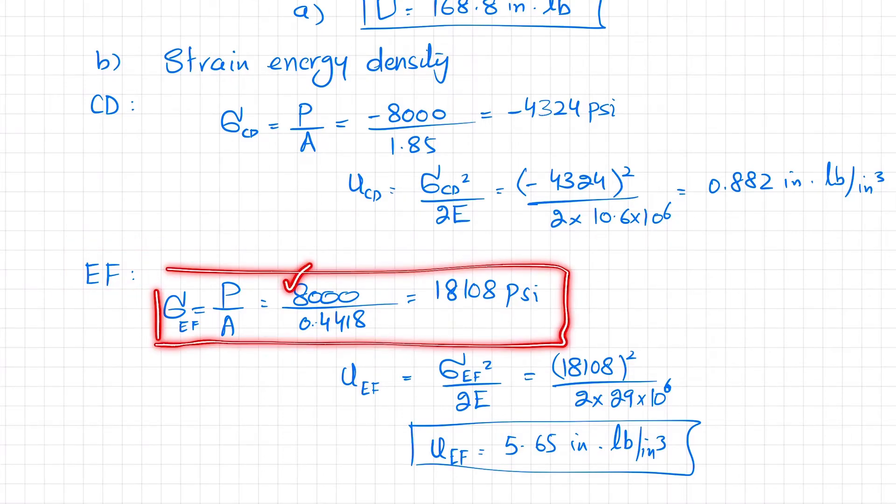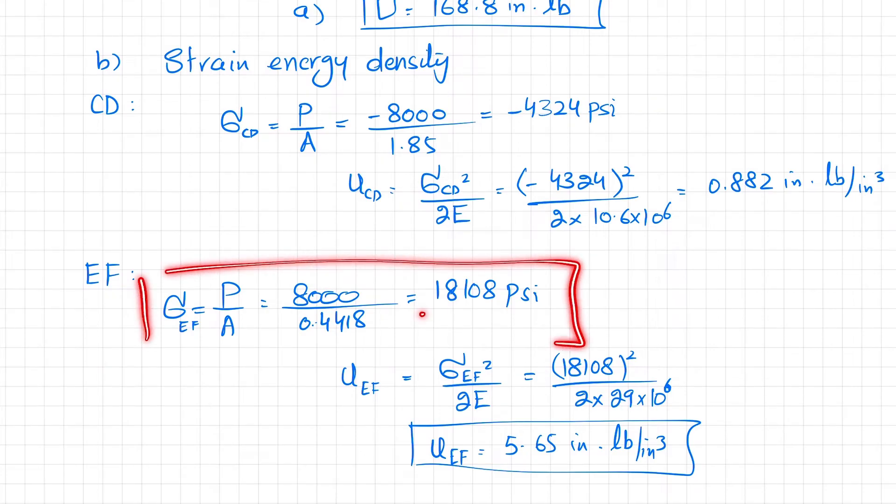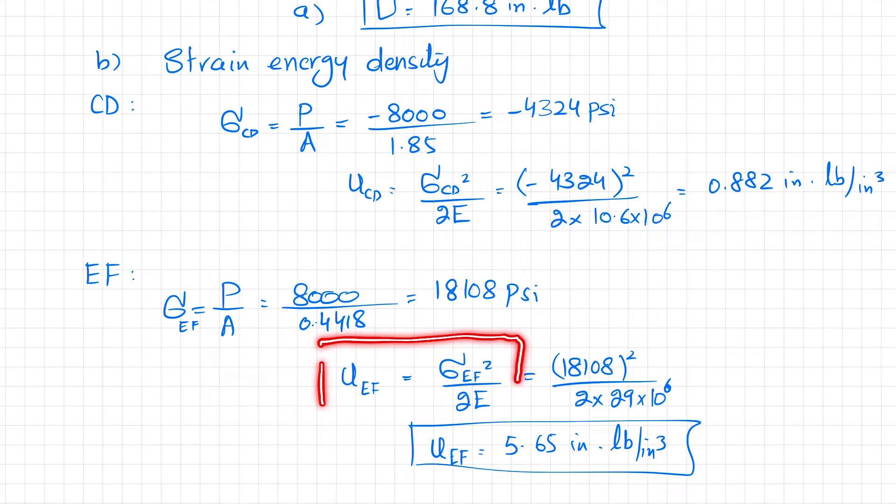For rod EF, stress equals load per unit area. Here the load is tensile and the area of EF is 0.4418, so when you put it, the stress in EF will be 18,108 psi. Now strain energy density in rod EF equals stress squared over 2E. When you put the value of this stress and E of steel, you get the strain energy density in rod EF as 5.65 inch-pounds per cubic inch.